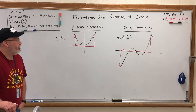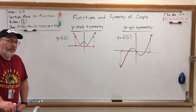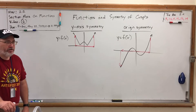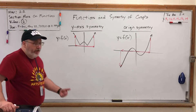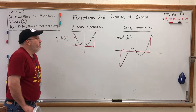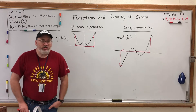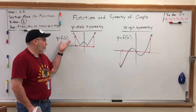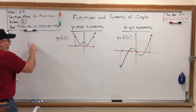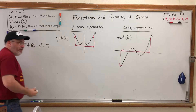In the previous videos, we discussed equations and symmetries of graphs, and we developed techniques for determining in advance if the graph of an equation would have y-axis symmetry, x-axis symmetry, or origin symmetry. But we're also talking about functions, so it's reasonable to ask the same questions when we have a function — y equals some function of x, or something like f of x equals x squared minus 7, where we're explicitly given a function.